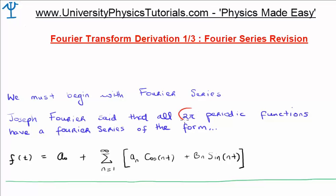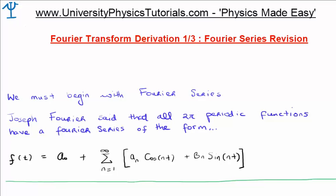Joseph Fourier suggested that all two-pi periodic functions have what's known as a Fourier series, of the form written on the bottom of your screen. So let's say we have a function of time, f of t. The first thing we have in the Fourier series is a constant term, a_0 — sometimes written as a_0 over two. We then add the infinite power series going from n equals one to infinity, of the coefficient a_n multiplied by cosine nt, and the coefficient b_n multiplied by sine nt.